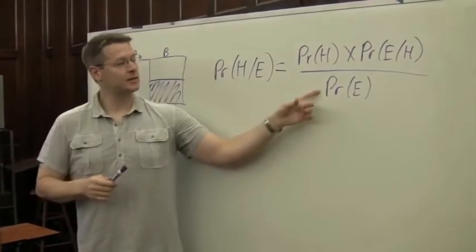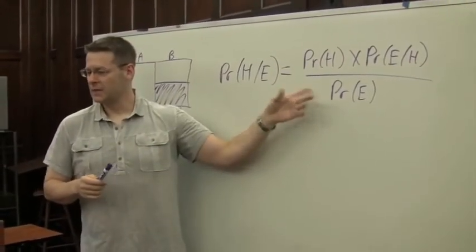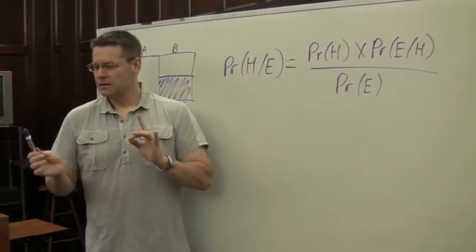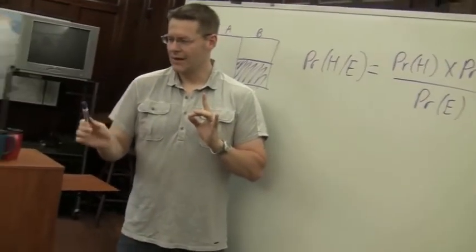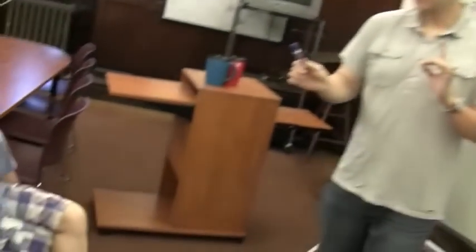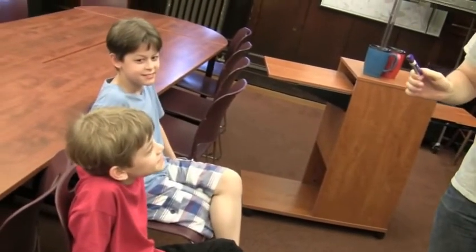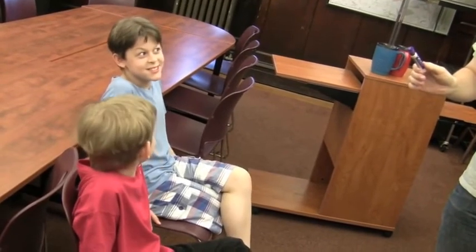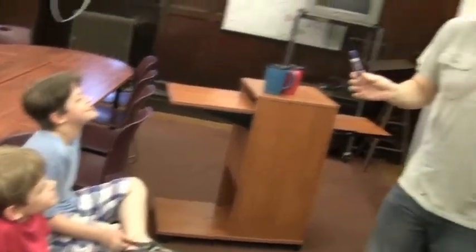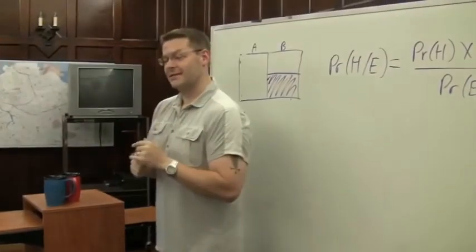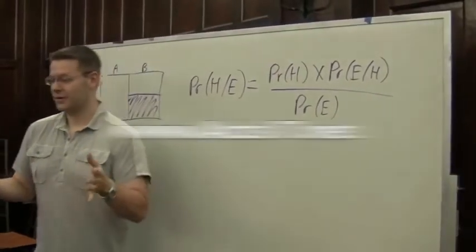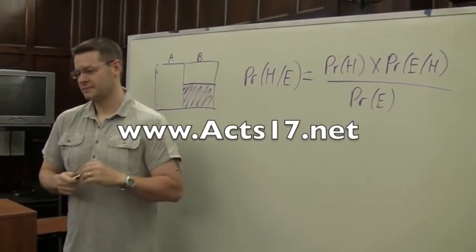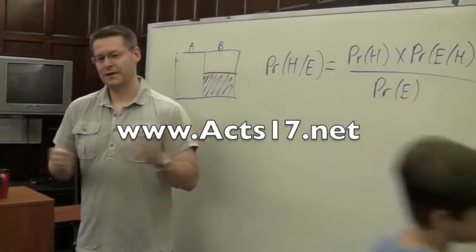One more question. We've seen that Bayes' theorem is actually pretty easy. Is it easy to rock a rhyme that's right on time? It's tricky — it's tricky to rock a rhyme. So it's easy to use Bayes' theorem; it's tricky to rock a rhyme. All right, get out of here. I've taught you everything I can possibly teach you.